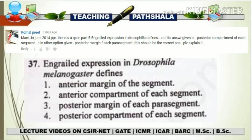The question is: engrailed expression in Drosophila melanogaster defines — what? They are directly asking the function of engrailed expression and what kind of overall polarity it leads to. The first option is the anterior margin of a segment. The second option is the anterior compartment of each segment. The third option is the posterior margin of each parasegment. And the fourth option is the posterior compartment of each segment.